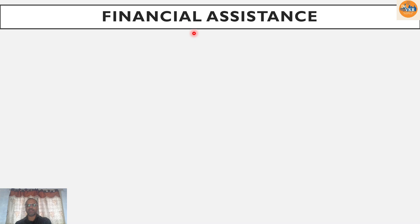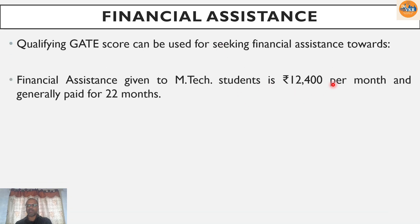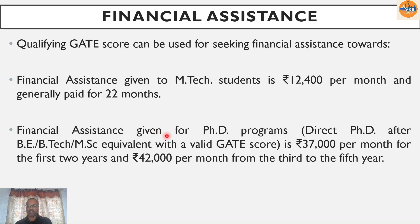Regarding the importance of GATE, we also get financial assistance from the government based on whether we are applying for M.Tech or a doctoral program. For master students, the stipend is around ₹12,400 per month, generally given for 22 months. For doctoral programs, whether direct PhD or doctoral degree, we get ₹37,000 per month for the first two years, and ₹42,000 per month for the next three years as fellowship. With GATE qualification, even if we join any private engineering college or deemed university through GATE, we get this financial assistance.